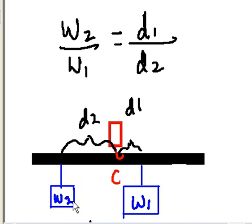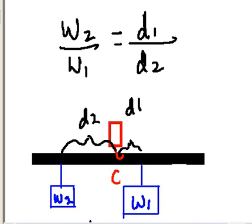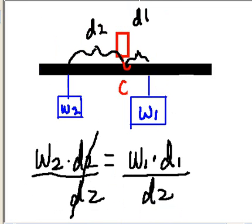So we have W2 over W1 equals D1 over D2 — it sort of follows a counterclockwise direction. We started out by simply stating the turning moments around the fulcrum: W2 times D2 equals W1 times D1. And that's it.